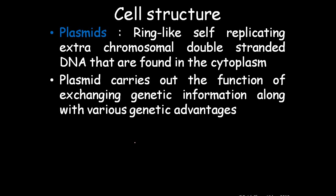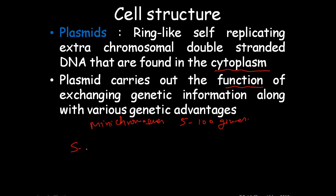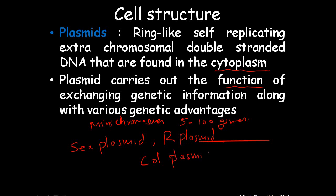Plasmids are ring-shaped, self-replicating, extrachromosomal, double-stranded DNA found in the cytoplasm. They act as genetic material in the cell and help in exchanging genetic information. They are also called mini-chromosomes as they carry around 5 to 100 genes. On the basis of functions they are divided into types such as sex plasmid, R plasmid, col plasmid, and so on.